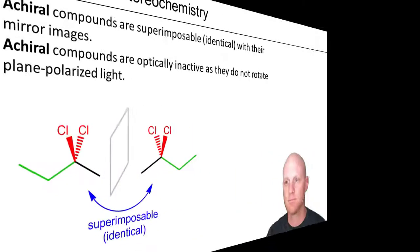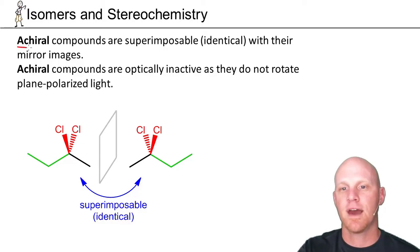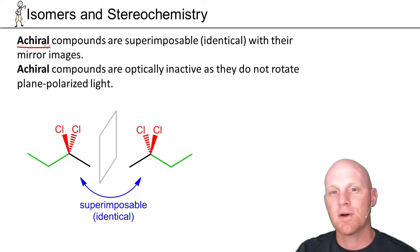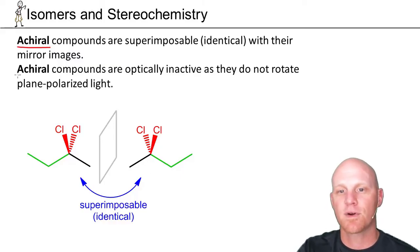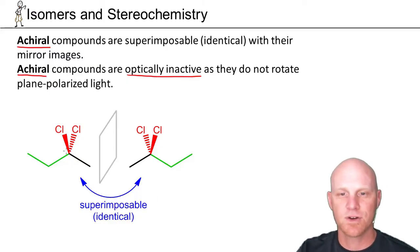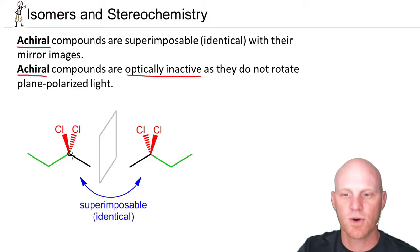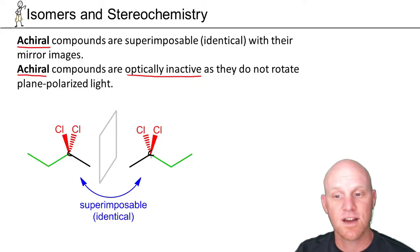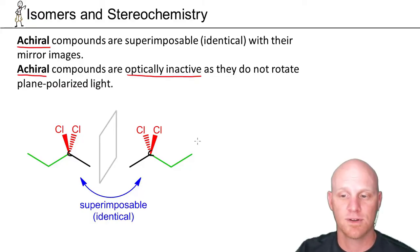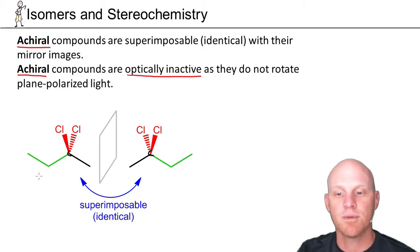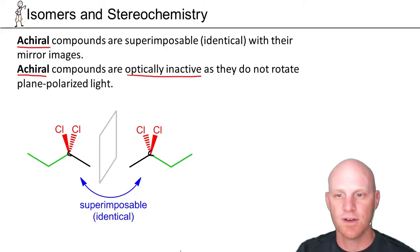Here we'll take a look at an example of an achiral compound. An achiral compound is identical to its mirror image, and achiral compounds are optically inactive — they don't rotate plane polarized light. In this example, the carbon atom bonded to two chlorines, a methyl, and an ethyl is not a chiral center because the two chlorines are identical — it's not bonded to four different things. As a result, these compounds are not chiral. If I flip the compound on the right and rotate it 180 degrees, it would superimpose perfectly with the compound on the left — they're exactly identical and superimposable.